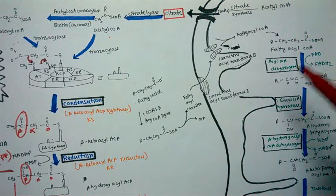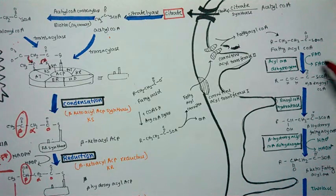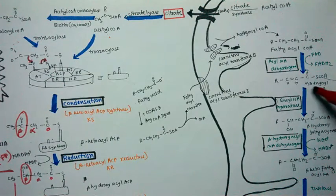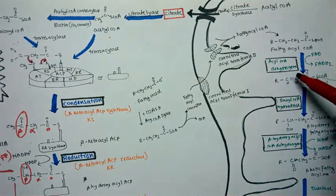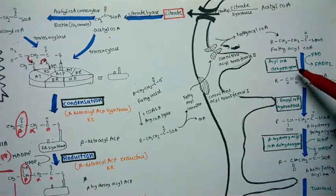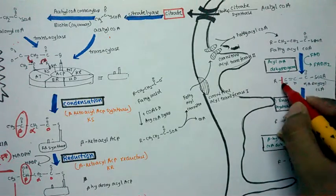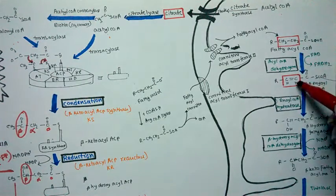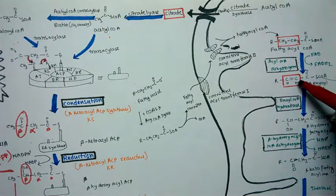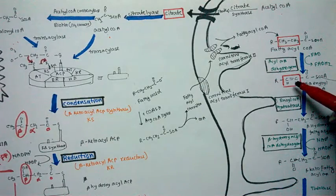Inside the mitochondria the reactions are essentially the reverse of fatty acid synthesis. The first reaction converts fatty acyl-CoA into alpha-beta enoyl-CoA, catalyzed by acyl-CoA dehydrogenase. This is a dehydrogenation — an oxidation reaction — in which hydrogen is removed, reducing the number of hydrogens and thus oxidizing the molecule.